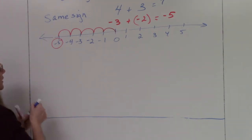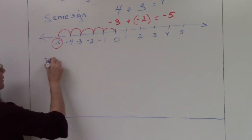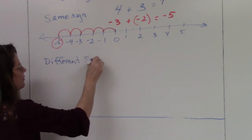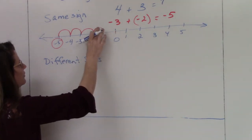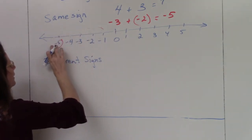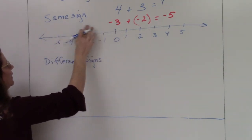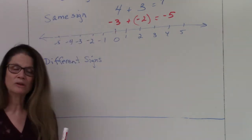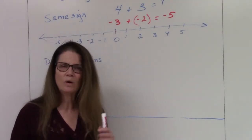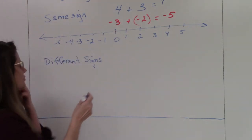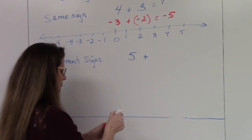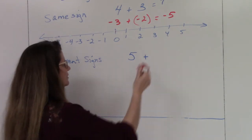When we get two different signs, that's when things get a little tricky. I'll show you a couple of different ways to see this so you understand why the answer has the sign that it does — then I'll give you the rule. I don't want to just hand you a rule; I want you to understand why it works. So we'll start with positive five plus a negative number.